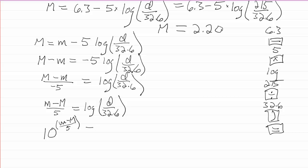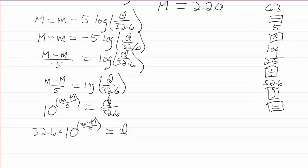But that will equal the d over 32.6. Now I can multiply out from underneath by that 32.6, and I would get 32.6 times 10 with an exponent on it of little m minus capital M over 5 is equal to d. And so this is a way that we can actually determine the distance to a star.